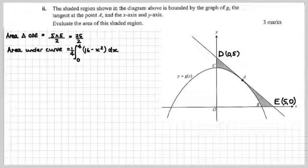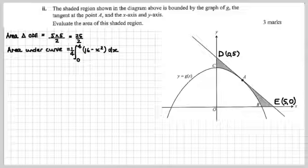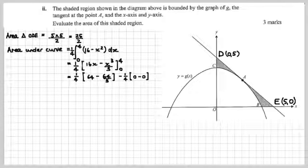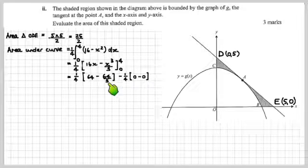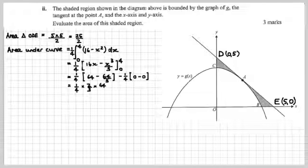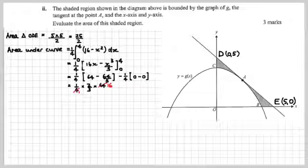The area under the curve is going to be one-quarter of (16x minus x³/3), integrated with respect to x from 0 to 4. Evaluating between 0 and 4: 16 times 4 is 64, minus 4 cubed over 3, which is 64/3. So we get one-quarter times two-thirds of 64. That's 64 minus one-third of it, which is two-thirds of it — giving us 32 over 3.